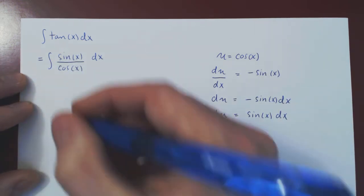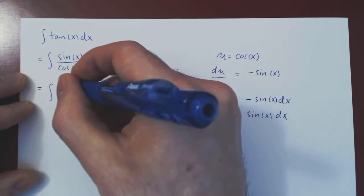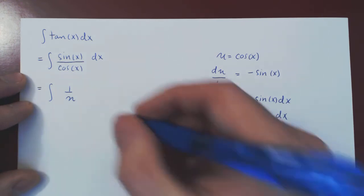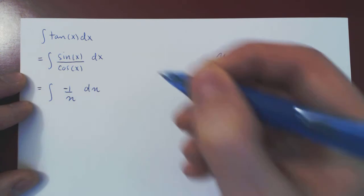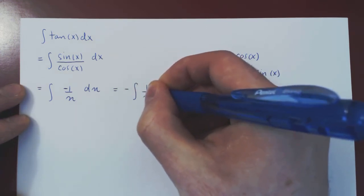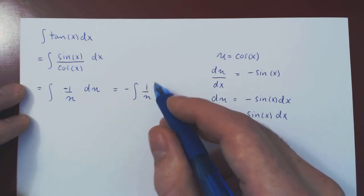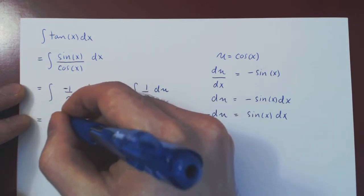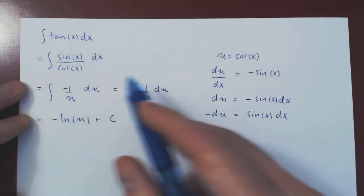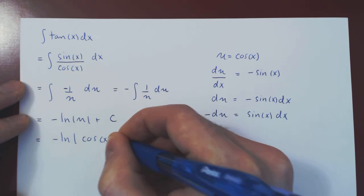Now we carry out the substitution. We have 1 over cos x, but u is cos x, giving 1 over u. Times sine of x dx, which equals negative du. Factoring out the negative, we get negative the integral of 1 over u du. The integral of 1 over u is ln of u, so we get negative ln of u plus c. Substituting back, u is cos x, giving negative ln of |cos x| plus c.